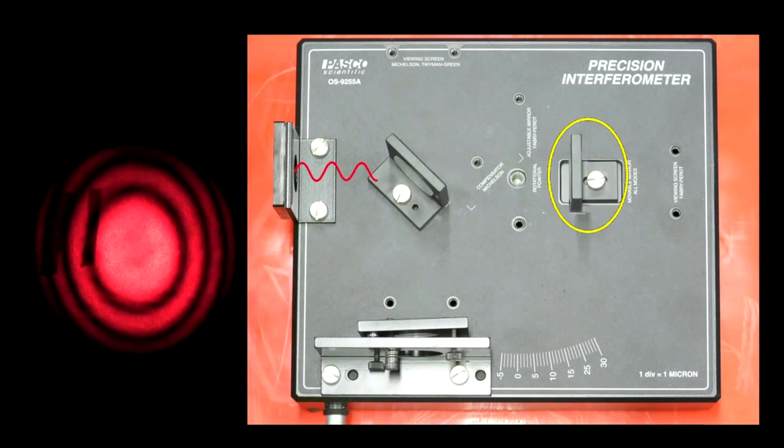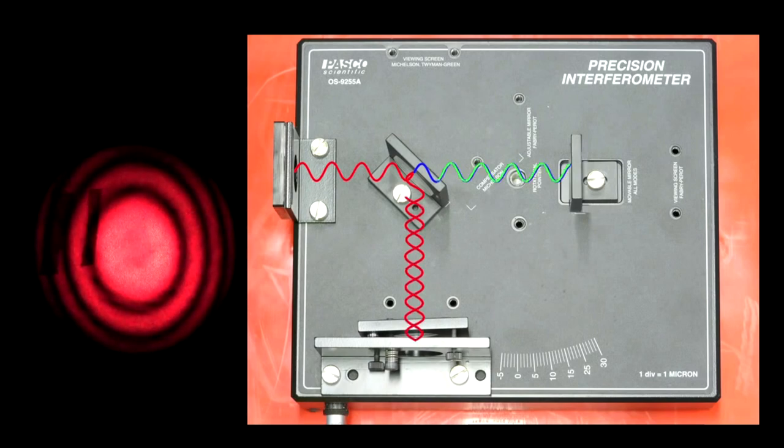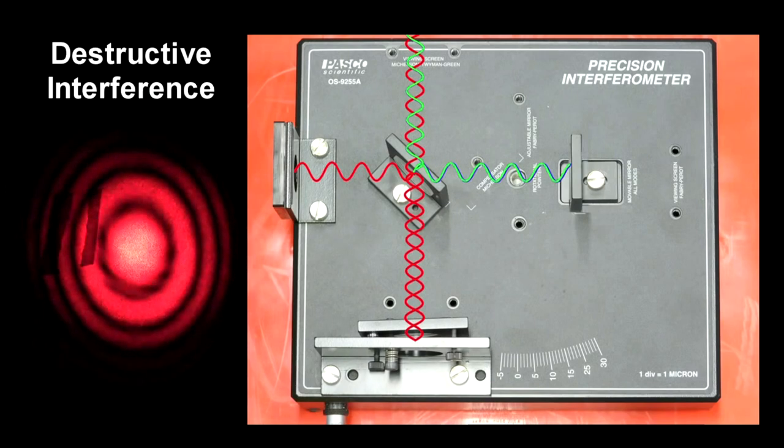If we move one of the mirrors by one quarter of a wavelength, that wave will have traveled one half of a wavelength less distance than the other one. This produces the maximum destructive interference. You can see the shift in the fringes from the bright to the dark.